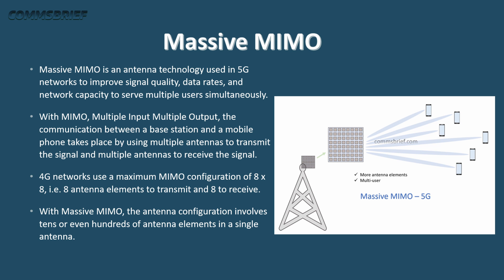Massive MIMO is an advanced antenna technology used in 5G networks to improve signal quality, data rates, and network capacity to serve multiple users simultaneously. With MIMO — Multiple Input Multiple Output — the communication between a base station and a mobile phone takes place using multiple antennas to transmit the signal and multiple antennas to receive the signal. But what does 'multiple' actually mean here?